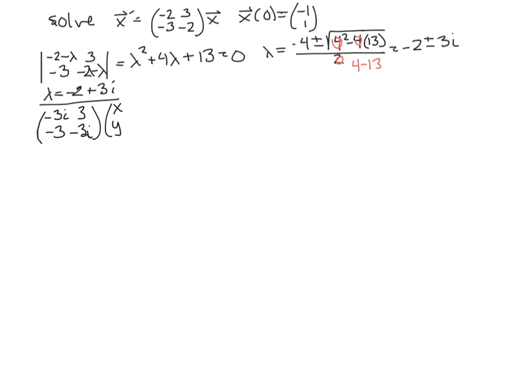Alright, times [x; y] = [0; 0]. So -3ix + 3y = 0. And -3x - 3iy = 0. And if I look at that top equation, I would pick x to be 1, and y to be i.